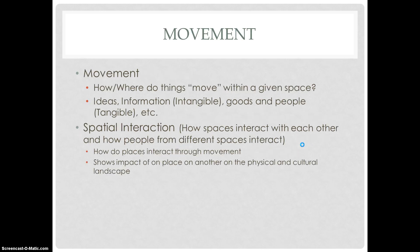The last theme of geography is movement — how and where things move within a given space. Examples include ideas and information, which are intangible, and goods and people, which are tangible. An important factor is spatial interaction, which describes how spaces and people from different spaces interact with each other. Spatial interaction shows the impact of one place on another on the physical and cultural landscape. Another key concept is friction of distance — how distance plays a role in one place's impact on another, and how distance interferes with interaction.